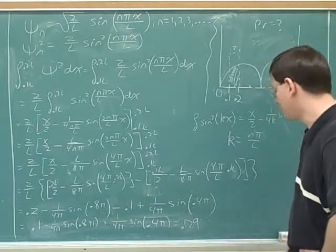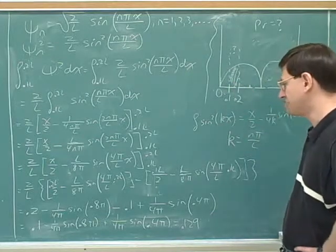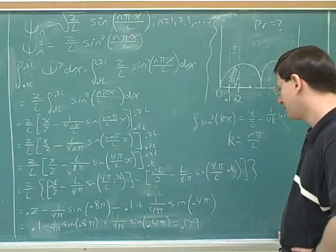Okay, so we get the probability was 0.129 that we would be in this region over here. All right.